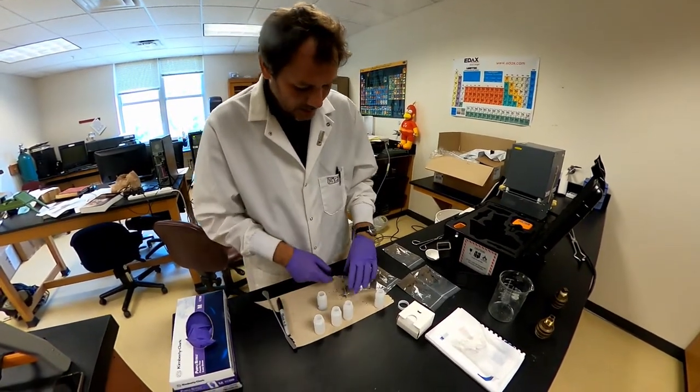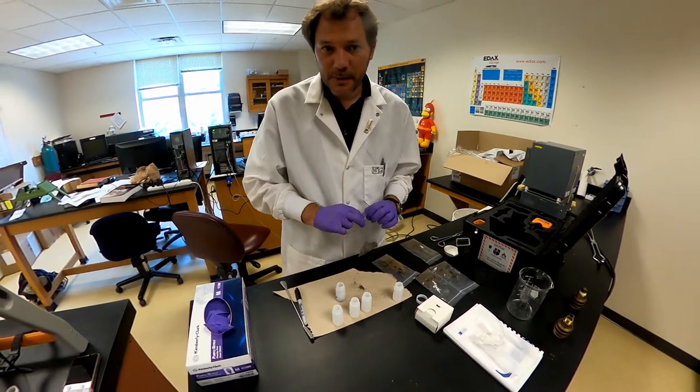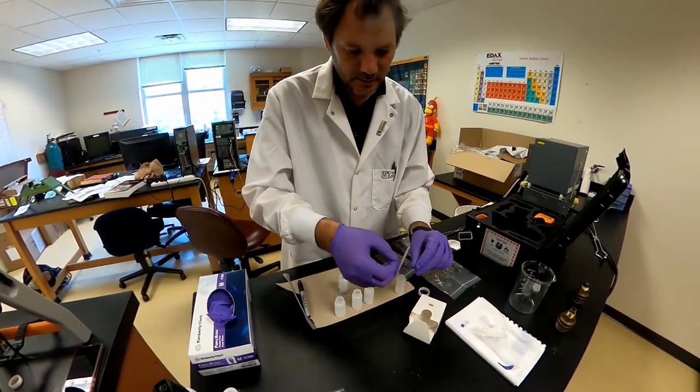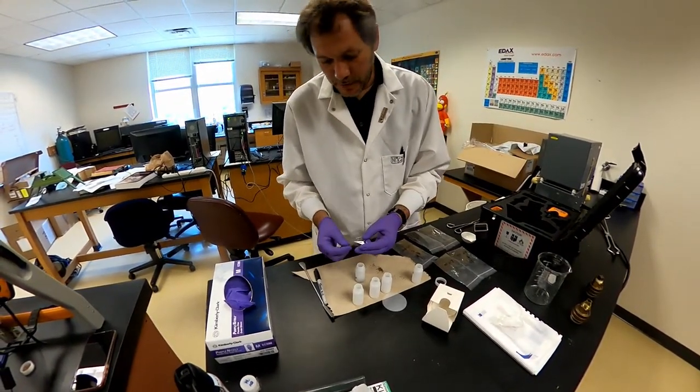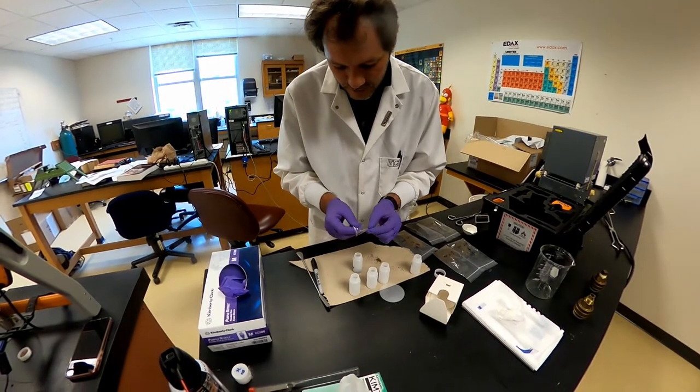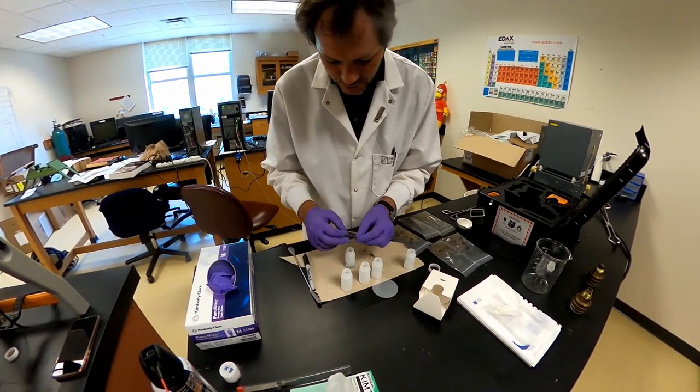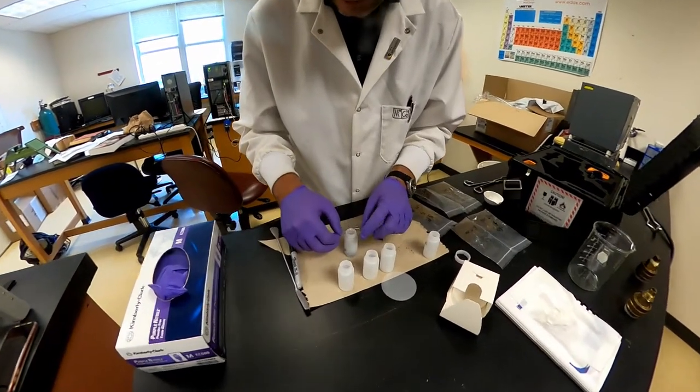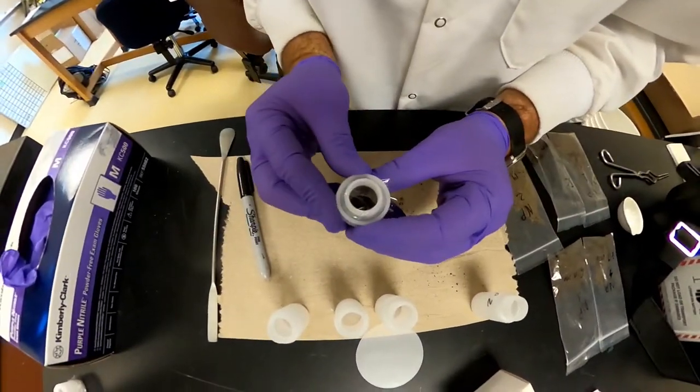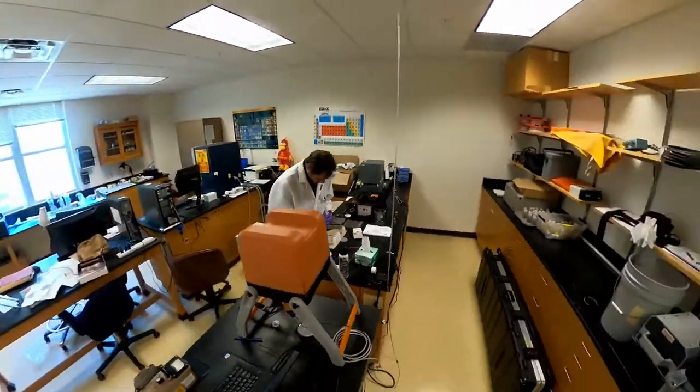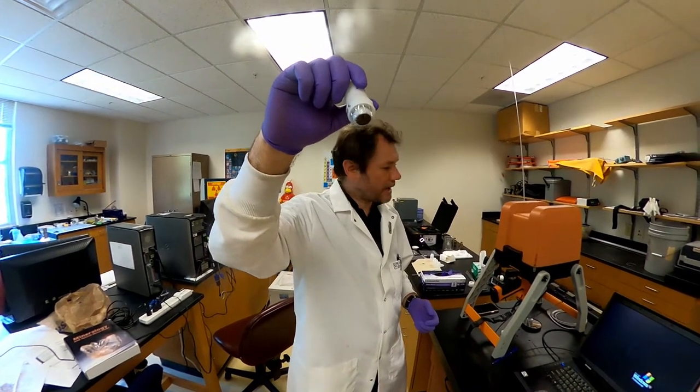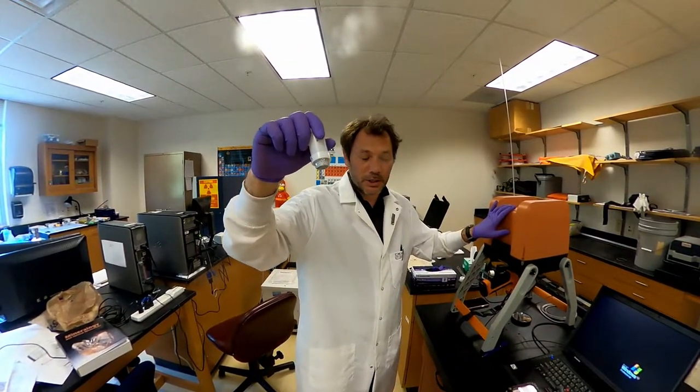And then we're going to cover that sample with an X-ray transparent film, which is in there, some kind of plastic that we know is not disturbing the X-rays and is not adding any contamination to the X-rays. It's only made of carbon, which cannot be analyzed by X-ray fluorescence. And that allows us to revert the sample and have our sample that will be in contact with the X-ray when we put it on top of the machine.